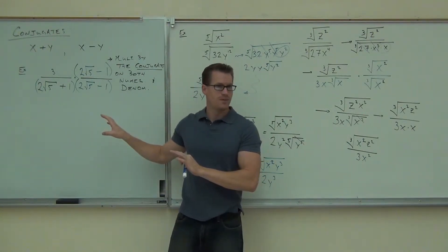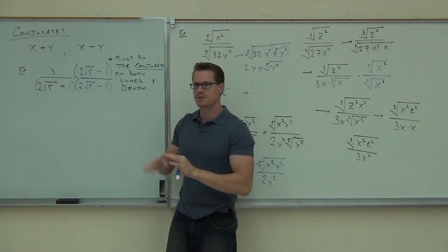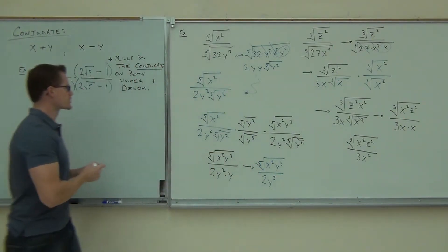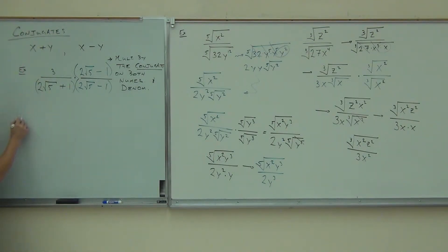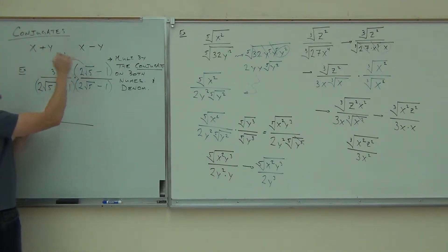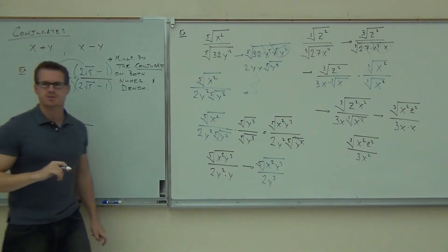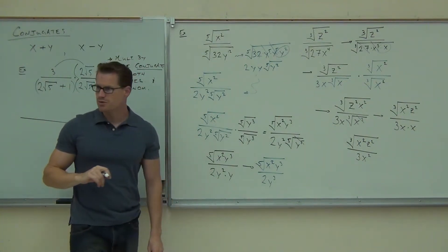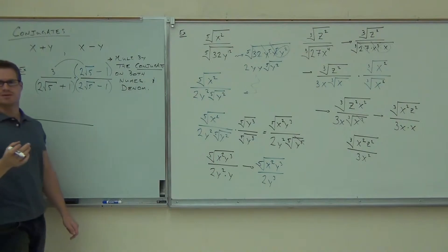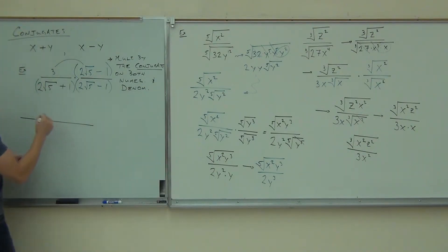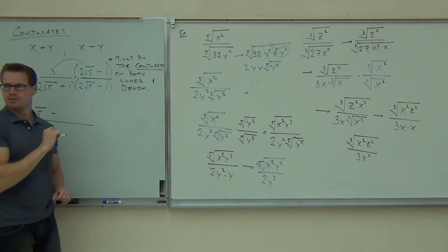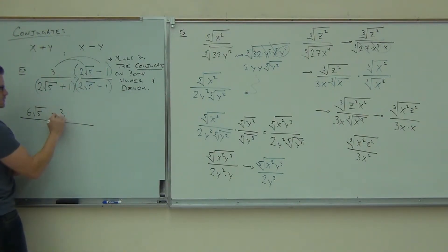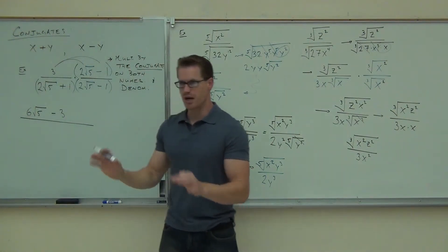Are you okay making it this far? We're going to see exactly what happens when we distribute now. Let's deal with the numerator first — that's the easy part. We do 3 times 2 root 5. How much is 3 times 2 root 5? 6 root 5. Not 6 root 30? We get 6 root 5, and then minus how much? 3. Good. The numerator is nice in this problem — you're done.